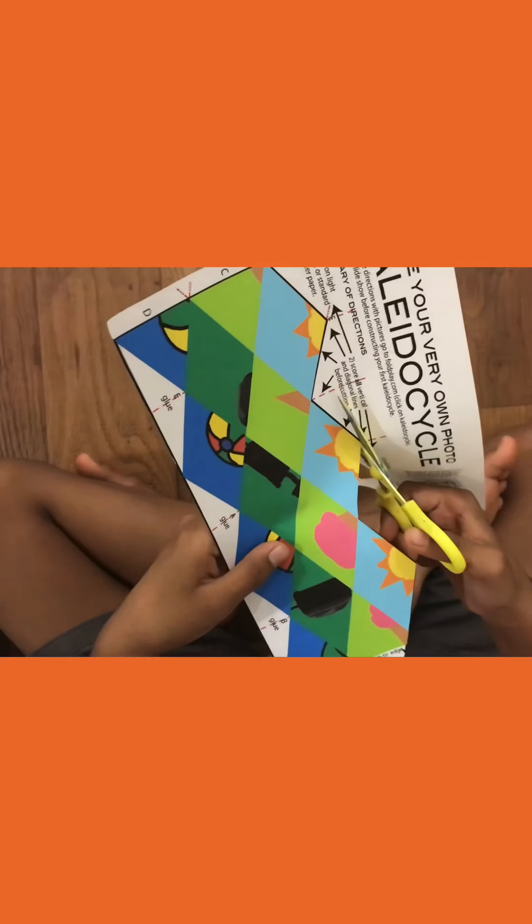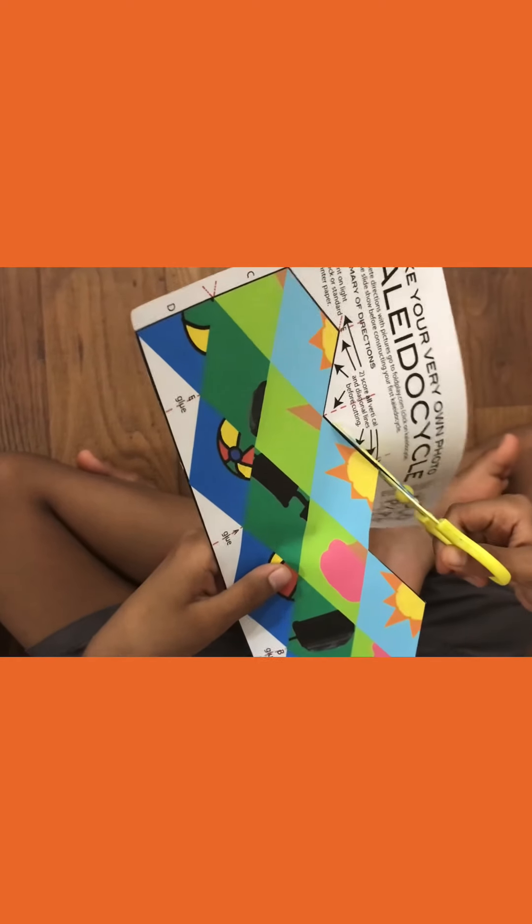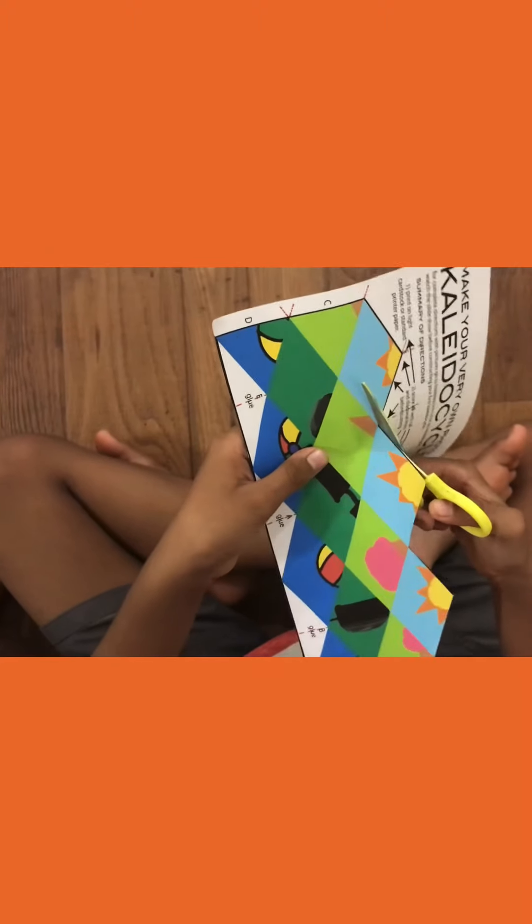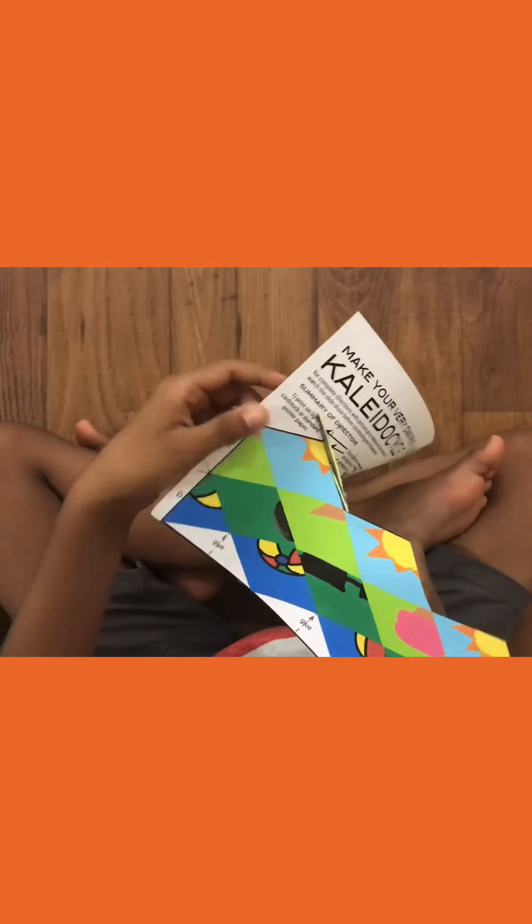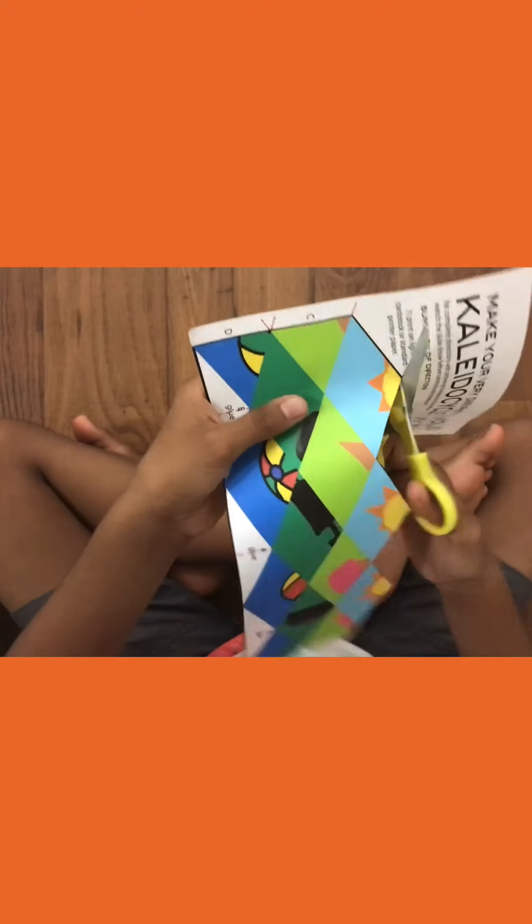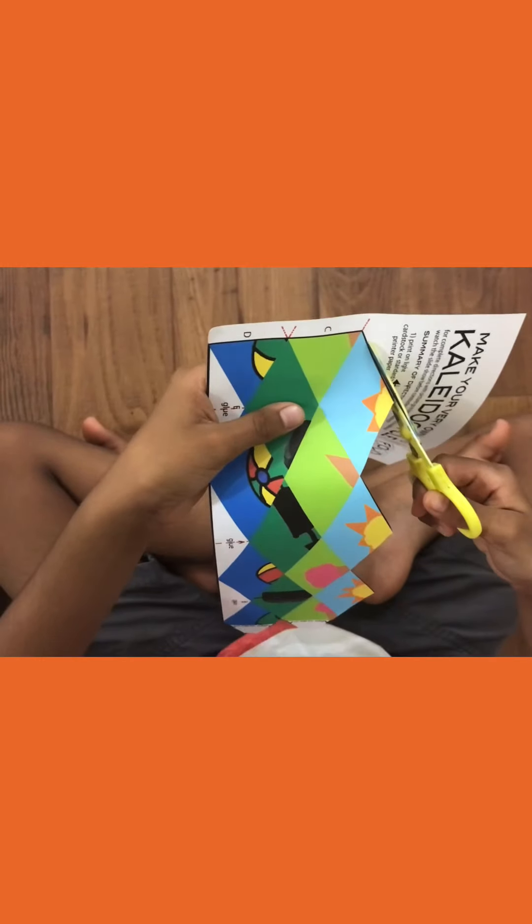Once you get here, you have to just cut the spikes like this. If you're having a little trouble, you can ask an adult to help you.